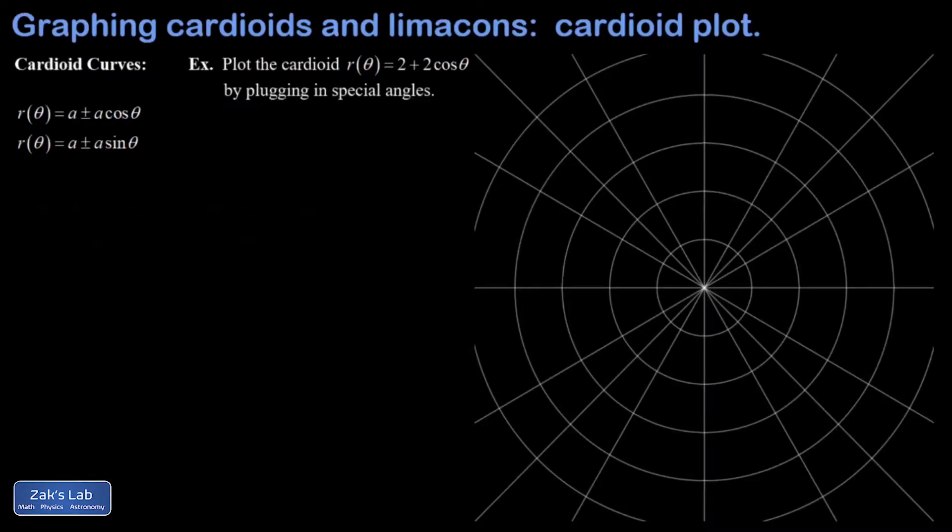In this video we're investigating the graphs of polar curves known as cardioids and limaçons. We're going to look at three different graphs and plot them point by point, and wrap up each one with an animation of how the curve is traced for increasing theta.